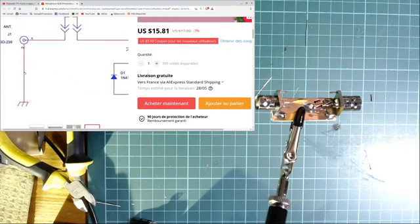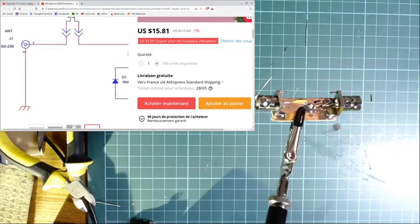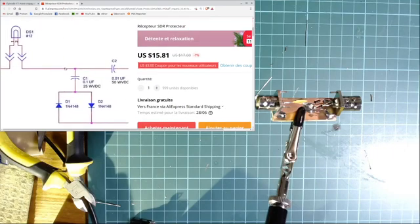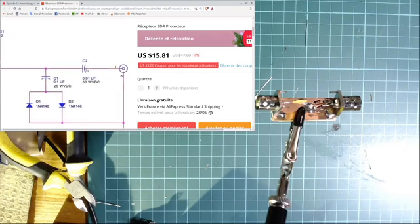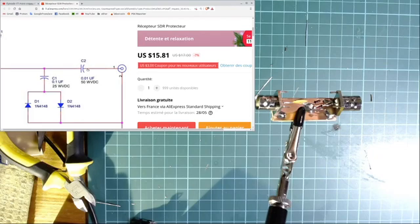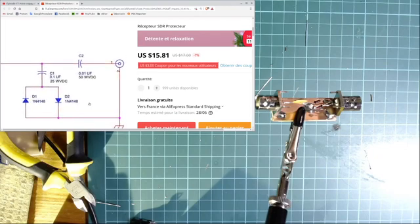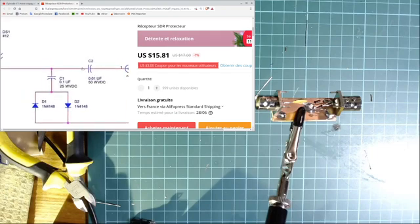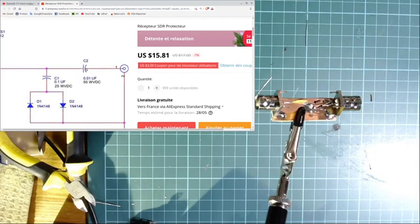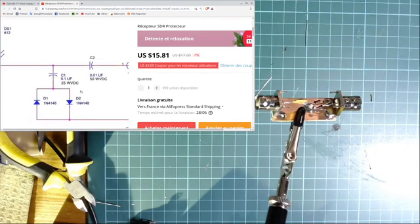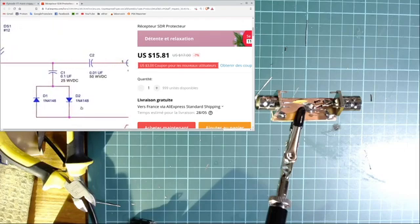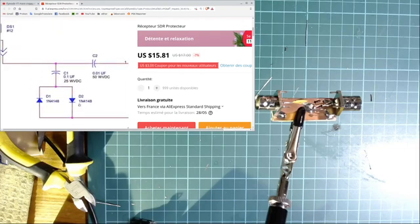This is the schematic. This is the input, this is just a lead. The point of the device that's supposed to protect delicate equipment like a spectrum analyzer or SDR is this part. It's extremely simple - it uses a capacitor here to block DC current and voltage.